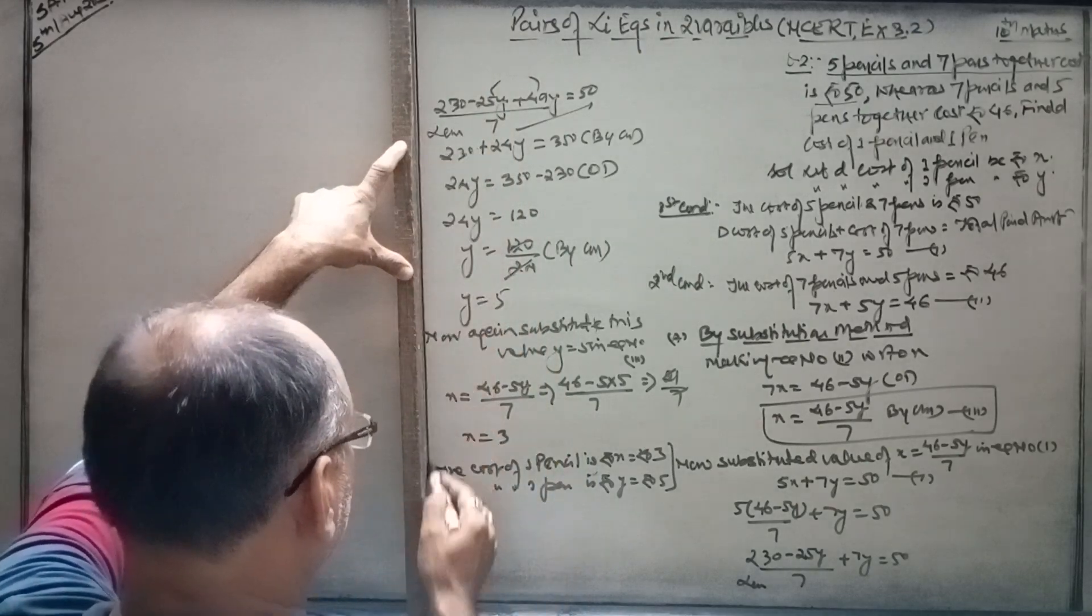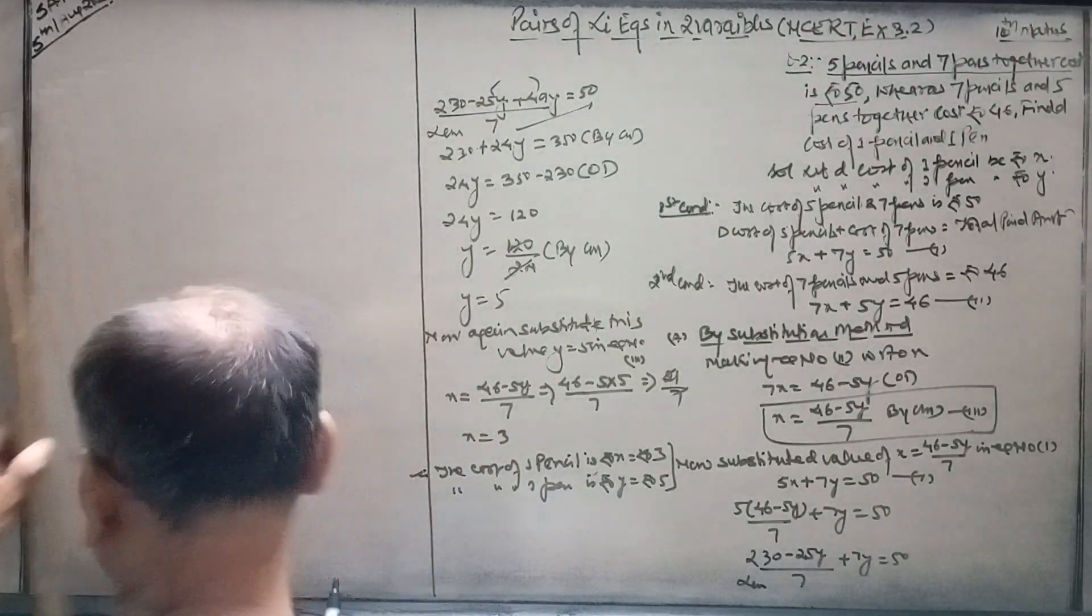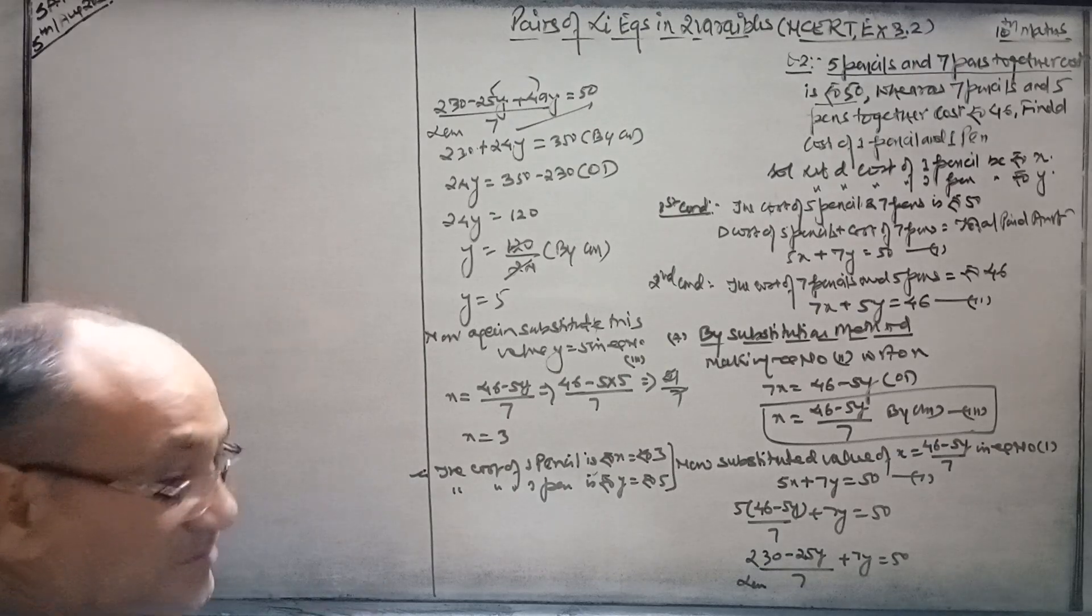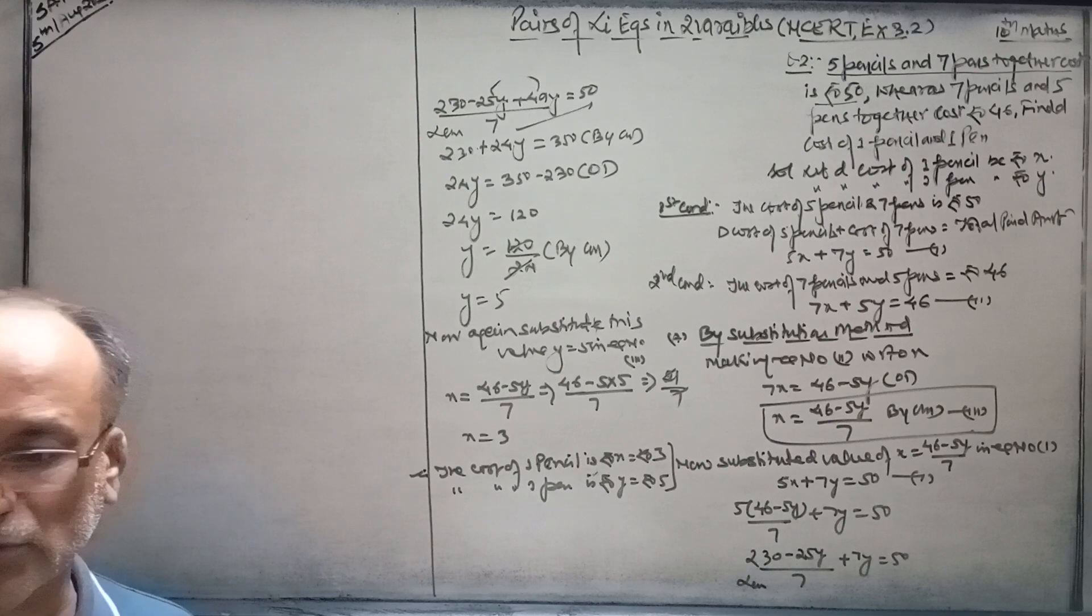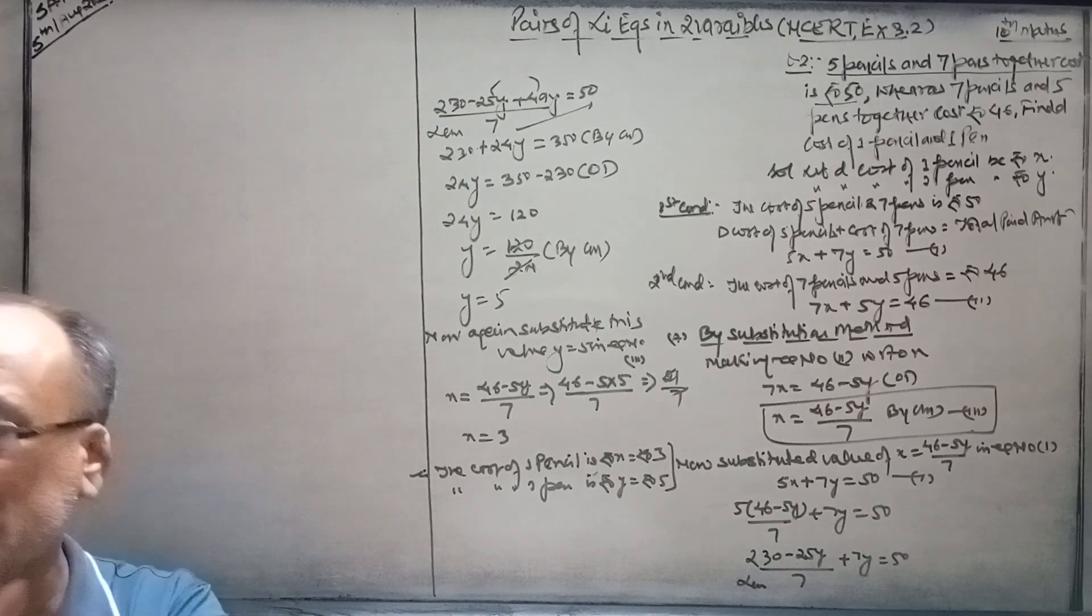If the particular method is not given in the question, now you can do it by any method. Time in 3 hours, now you are able to solve all the questions. This is the most important thing.